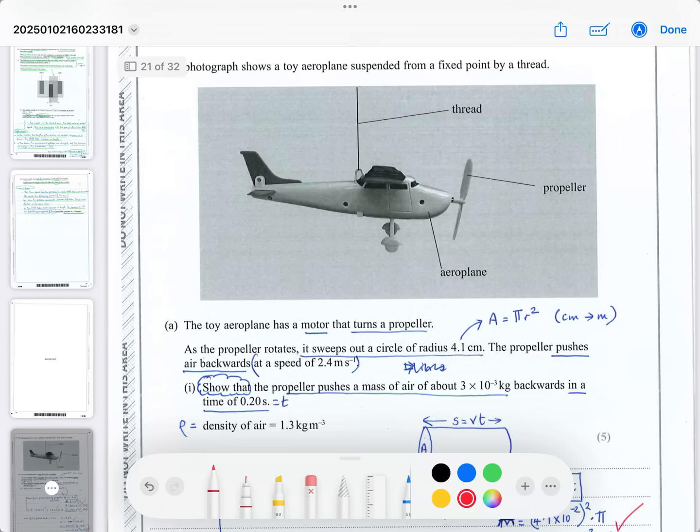The photograph shows a toy airplane suspended from a fixed line by a thread. You can see the diagram with the thread and propeller. The airplane has a motor that turns the propeller. As the propeller rotates, it sweeps out a circle based on the blade radius, and you can work out the area as πr².